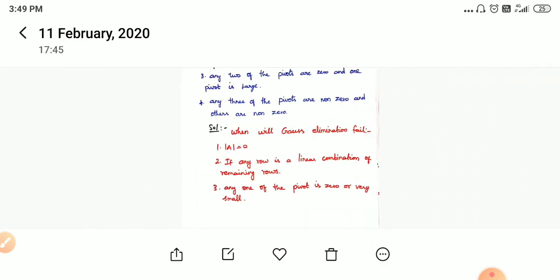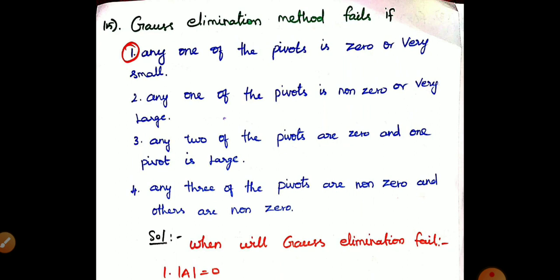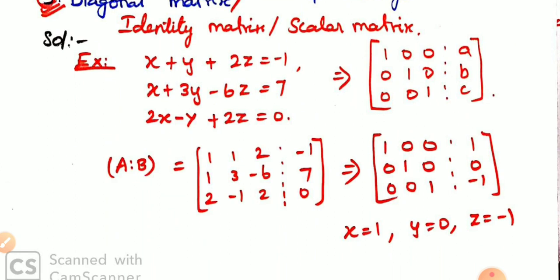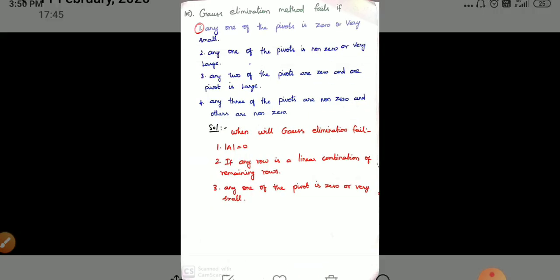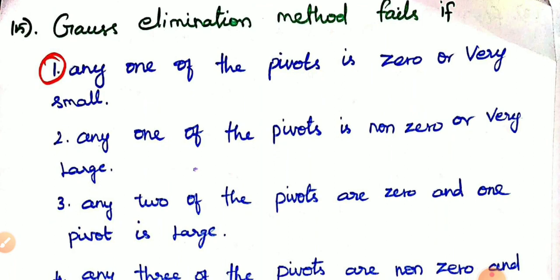Let's see the 15th question. In the Gauss-Jordan method, it is easier to answer directly, but it is not applicable in every case. The answer is: any one of the pivots is 0 or very small. In the pivot, there are diagonal elements — the x, y, z coefficients. These are the pivots. If you use 0, the method will fail. If the value is very small and you multiply, that is also a problem.